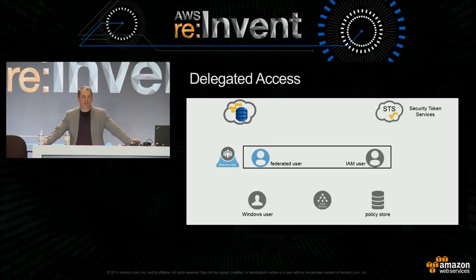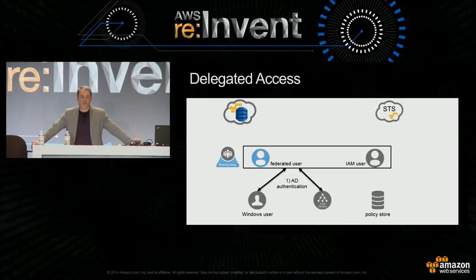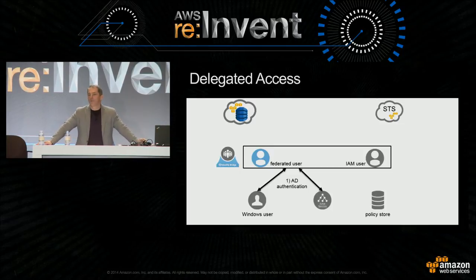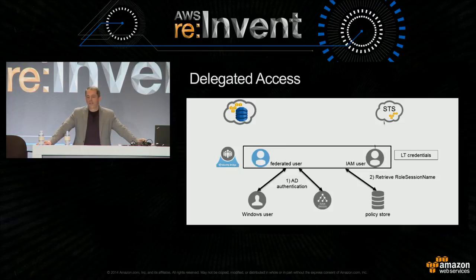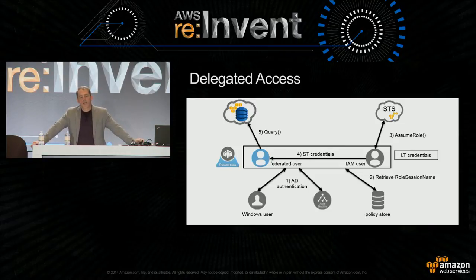Here's the classic model of delegated access. You built the portal and authenticated a user against Windows Active Directory. You've got an IAM user with long-term credentials stored somewhere. You either retrieve a policy fragment or a role, or call list roles to figure out what's available, and then the IAM user uses its long-term credentials to grab short-term credentials on behalf of the federated user—which they can then use, for example, to do queries on DynamoDB. The challenge is you're storing credentials and have to worry about the privilege level of the IAM user—it's a little challenging to pull off, plus you're writing your own code to do it.